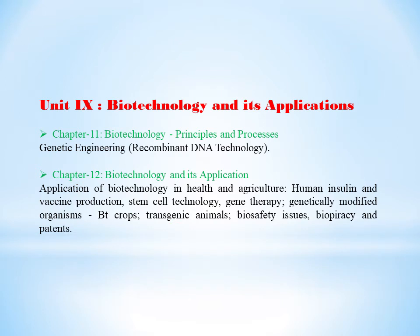Unit 9, that is especially the biotechnology part, comprises of two chapters — Chapter 11 and Chapter 12. In Chapter 11 we're learning about biotechnology, its principles and processes, and in Chapter 12 we are dealing with biotechnology and its application — how biotechnology is applied in health and agriculture.